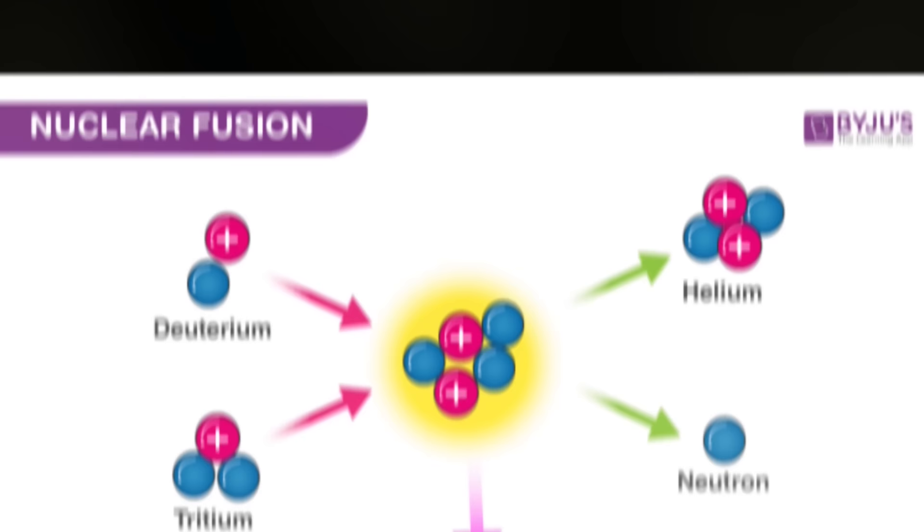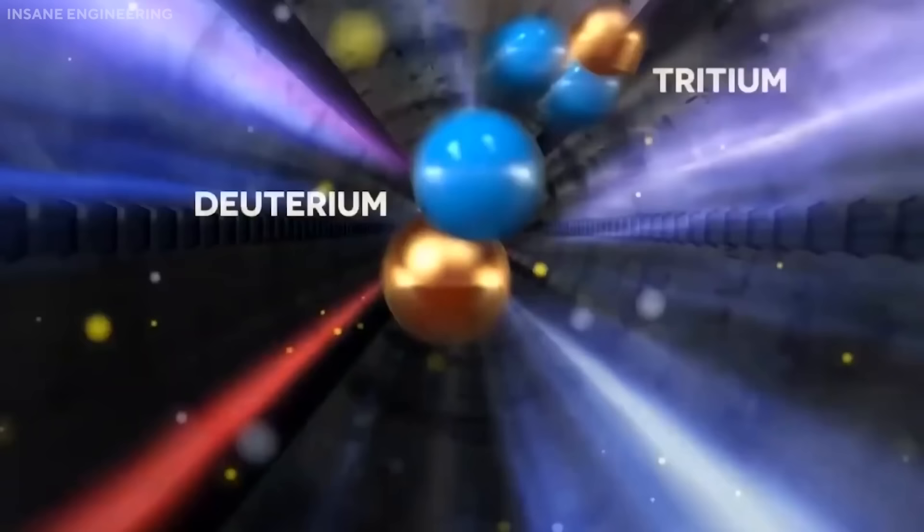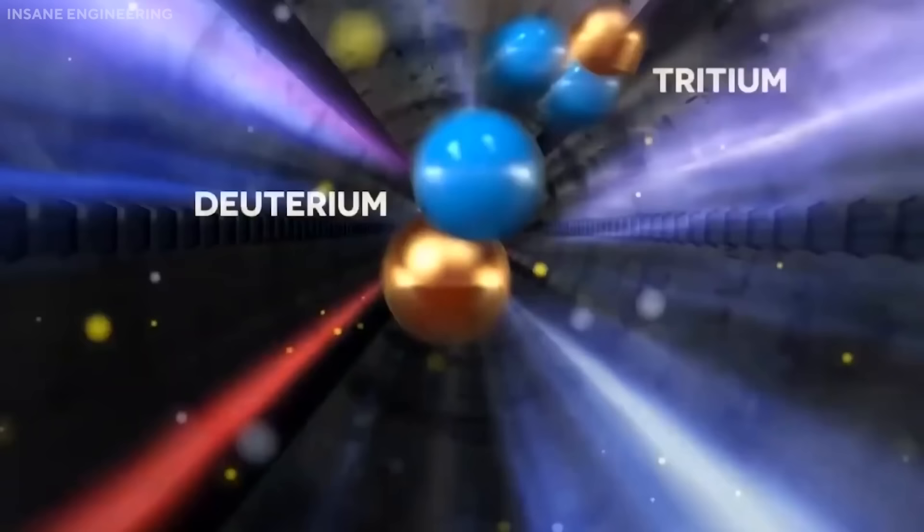But how do nuclear fusion reactors work? To answer these questions, let us first understand the basic principle of nuclear fusion. When two nuclei of hydrogen isotopes, such as deuterium and tritium, are brought close enough together, they can overcome the electrostatic repulsion between their positive charges and fuse into a heavier nucleus of helium.